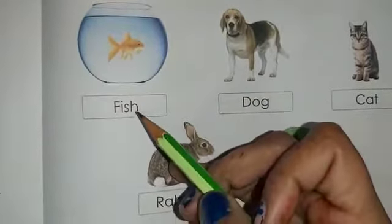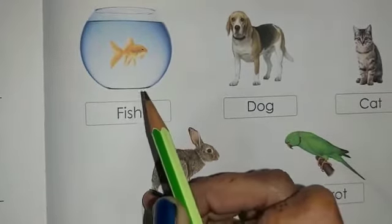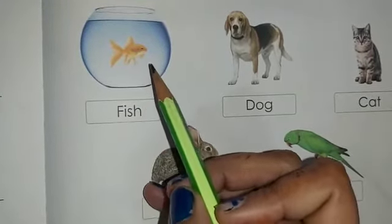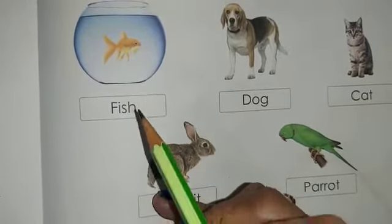As pets. Which are they? Let's start identifying them. First one is fish. Now, you might have seen a lot of people having aquarium at their home. We can keep fish in an aquarium at a home as a pet.